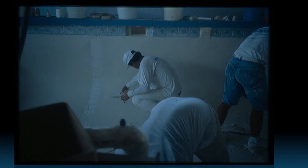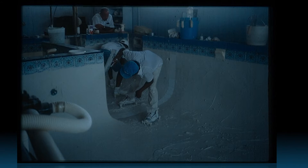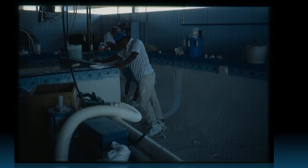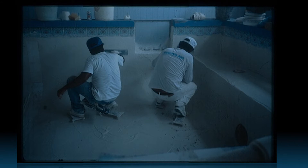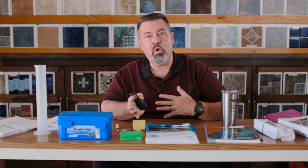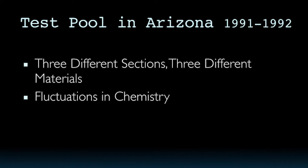We put in three different types of materials so that not any one section — every section was different from the other. Then we started up the pool and very quickly made the water corrosive. It would basically go from a corrosive etching condition, a leaching condition, to a precipitative condition or a scale-forming condition. So we alternated the chemistry.